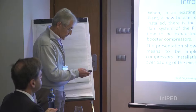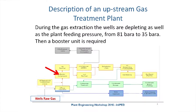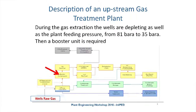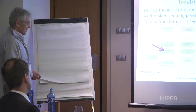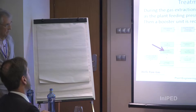It is necessary first to know how a treatment plant works in order to get a very good overall picture of the situation. We are in an upstream plant — there are the wells of raw gas. At the beginning of the exploitation, the pressure in the wells is normally very high, sometimes more than 300 bars.